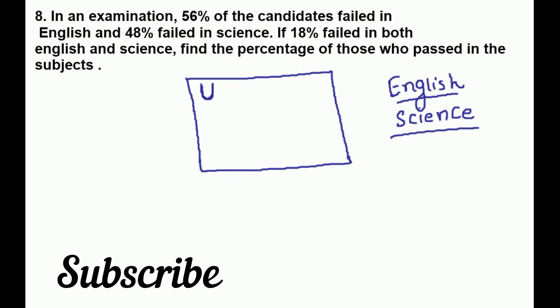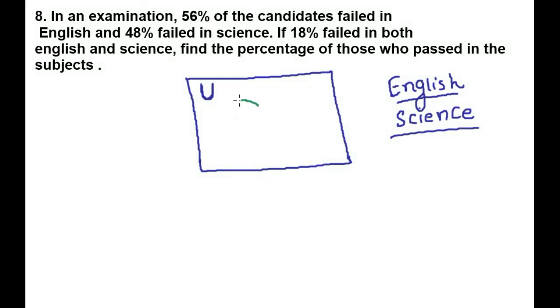Now we have two sets. This set is a green set which is 56% of students fail in English. 56% of students fail in exams. So number of students fail in exam is 56%. Now number of students fail in exam of science is 48%.